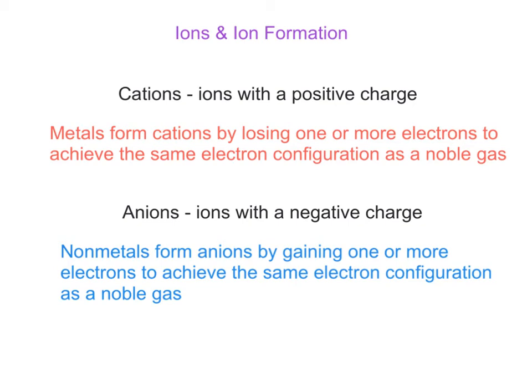So in this video, let's talk about ions and ion formation. One kind of ion is a cation. These are ions with a positive charge. Anions are ions with a negative charge.